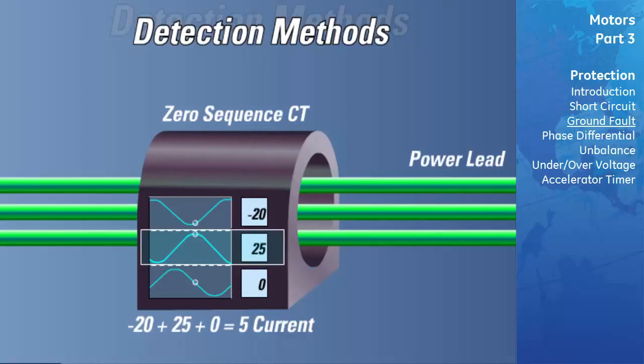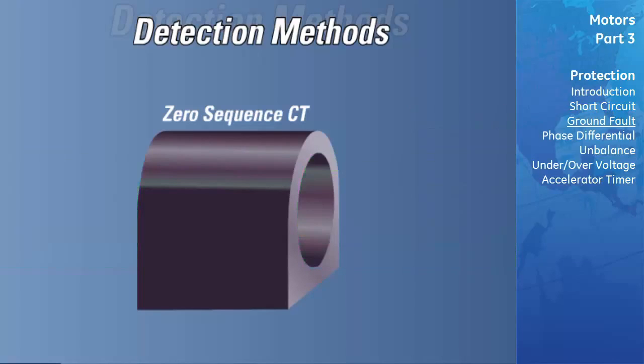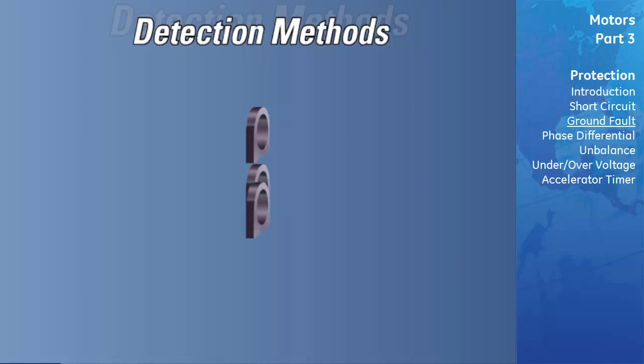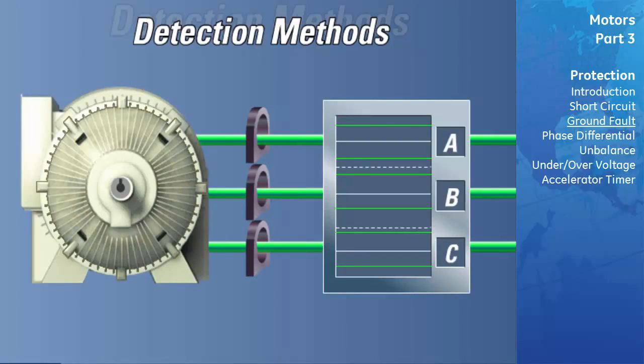The Residual Ground Fault Connection. If the cables are too large to fit through the zero-sequence CT's window, or the trench is too narrow to fit the zero-sequence CT, the residual ground fault configuration can be used. This configuration is inherently less sensitive than the zero-sequence configuration, owing to the fact that the differential CTs are not perfectly matched.